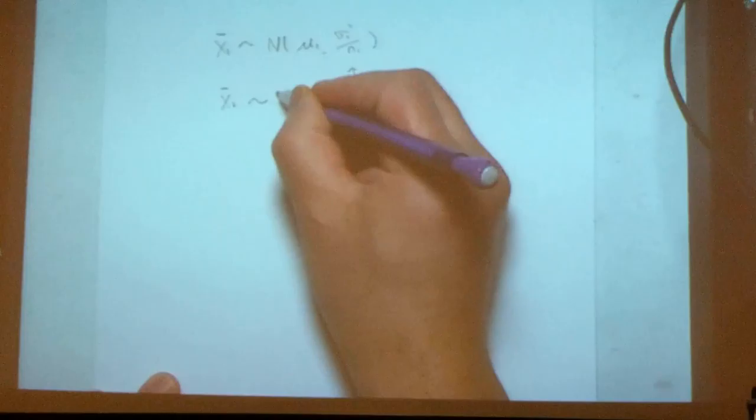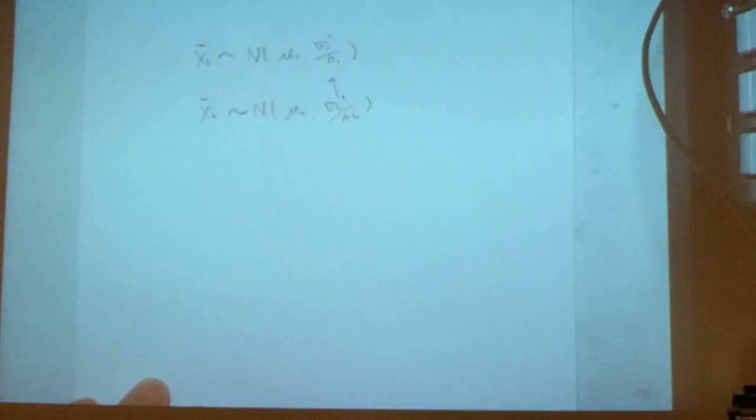And the sampling distribution for the second population is this guy. So this, again, is a key result that we discussed within the sampling distribution, right? This is the topic for one, for test three. So you have this one now.